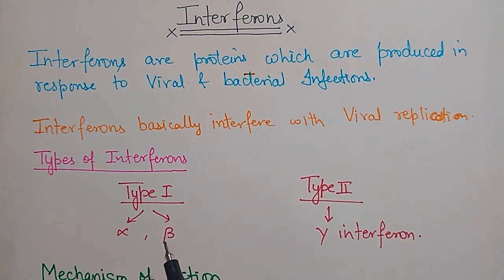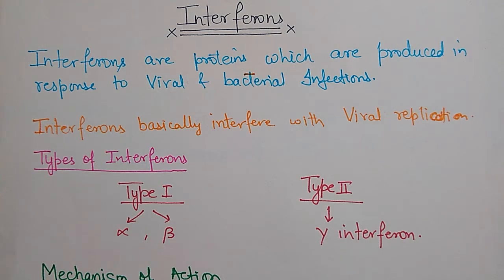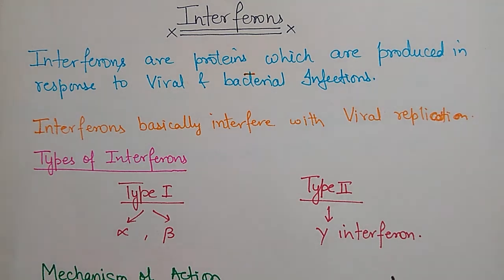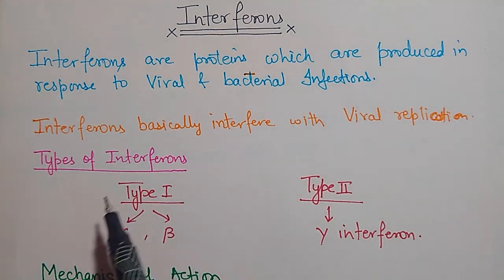There are two types of interferons: Type 1 and Type 2. Type 1 interferons are alpha and beta interferons — their structures are very similar, so they are grouped together. Alpha and beta are produced by macrophages, monocytes, fibroblasts, and other cells of the body, and are innate immunity interferons. Type 2 interferons are adaptive immunity interferons, produced by cytotoxic T-cells and natural killer T-cells.